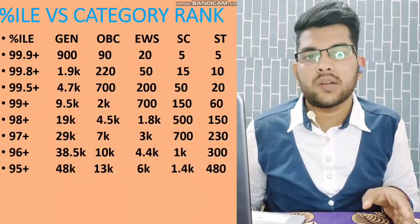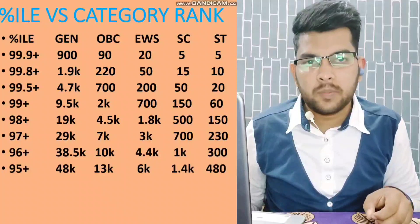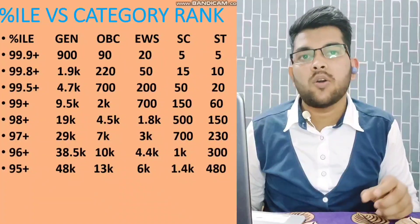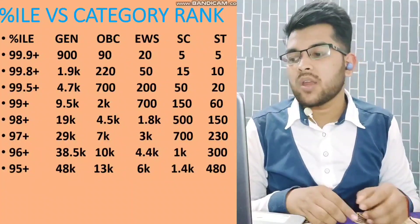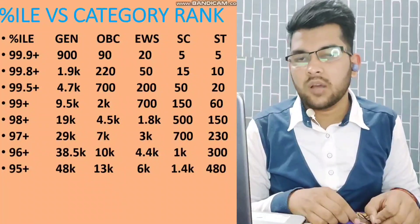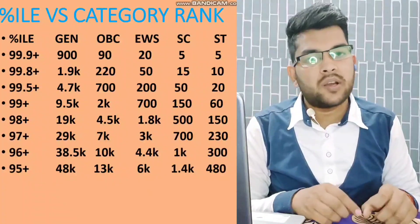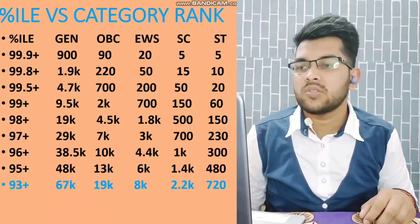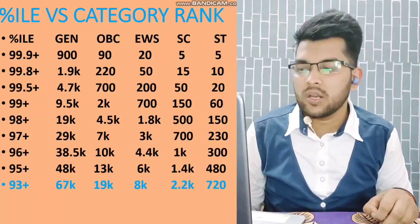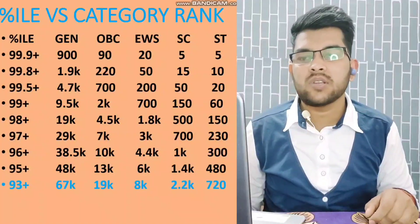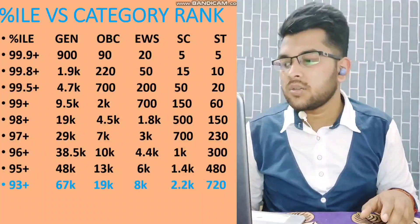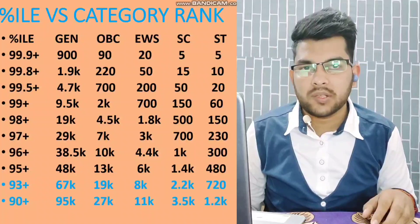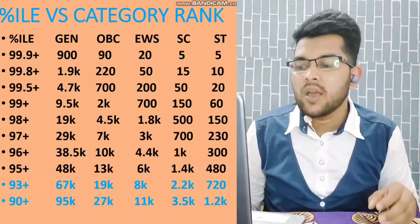For 95+ percentile: General rank under 48,000, OBC under 13,000, EWS under 6,000, SC under 1,400, and ST under 480 — 100% sure. For 93+ percentile: General rank under 67,000, OBC under 19,000, EWS under 8,000, SC under 2,200, and ST under 720. For 90+ percentile: General rank under 95,000, OBC under 27,000, EWS under 11,000, SC under 3,500, and ST under 1,200.